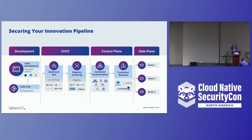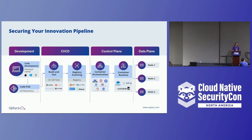This is the traditional CICD pipeline as we see it. On the far left, you have the development stage — developers working off laptops, crafting the crown jewels of your organization, really building that intellectual property. You move into the CICD stage: maybe a build server, scanning images, testing for compliance, vulnerabilities, registry scanning, and maybe secret scanning as well.